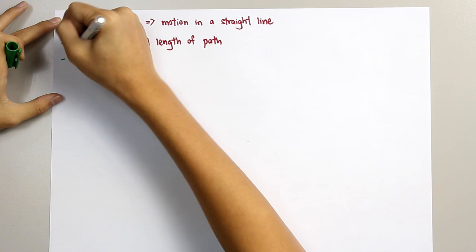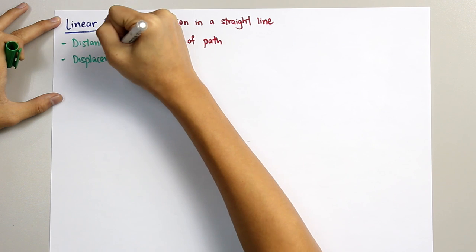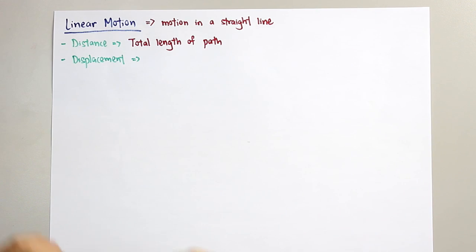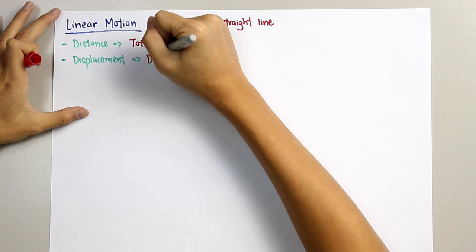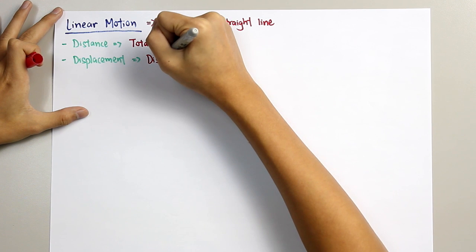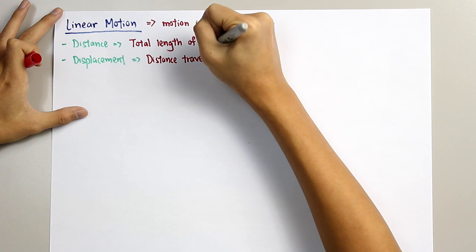Second, displacement. The definition for displacement is the distance traveled in a specific direction.